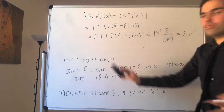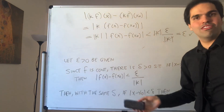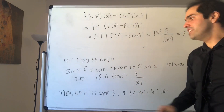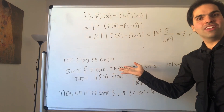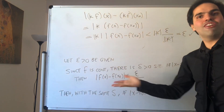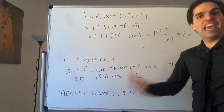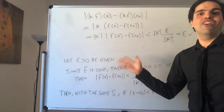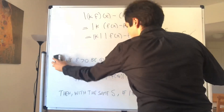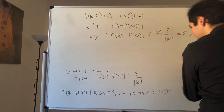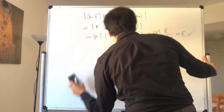The proof for sequences is very immediate: if x_n converges to x naught, then f(x_n) converges to f(x naught), so kf(x_n) converges to kf(x naught). Equally satisfying.